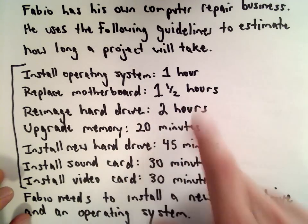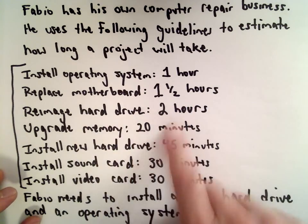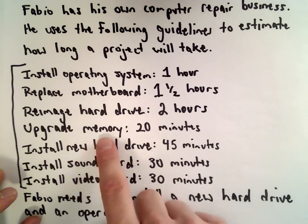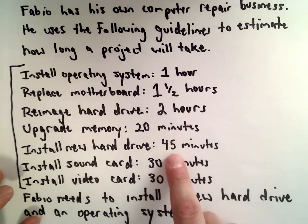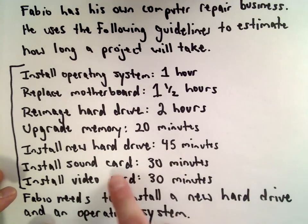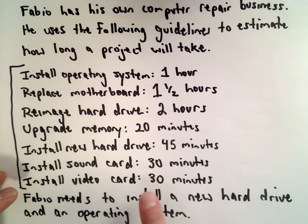To replace the motherboard, one and a half hours. To reimage the hard drive, two hours. To upgrade the memory, 20 minutes. To install a new hard drive, 45 minutes. To install a sound card, it's 30 minutes.